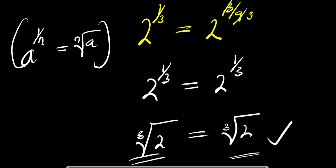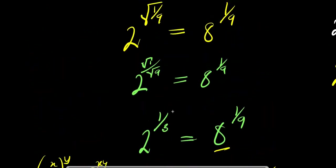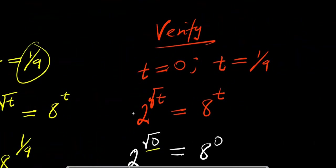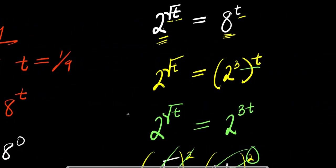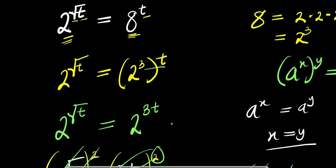Both sides are equal, confirming t equals one over nine satisfies the equation. So the values of t that satisfy this exponential equation are t equals zero and t equals one over nine. This is how you solve this exponential problem and find all values of t. Please don't forget to subscribe and share this video with your friends. Thank you and goodbye.